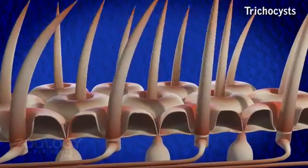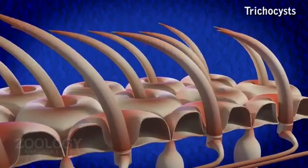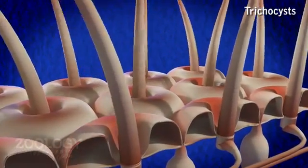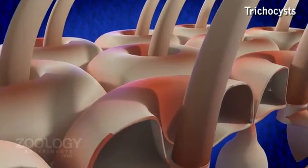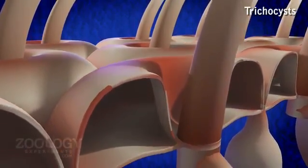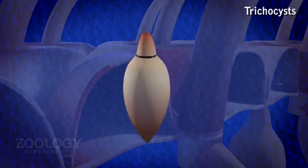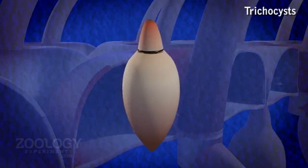Trichocyst. Trichocysts are peculiar rod-like or oval organelles present throughout the ectoplasm, alternating with basal bodies and oriented at right angles to the body surface. It is measuring about 4 micron in length.